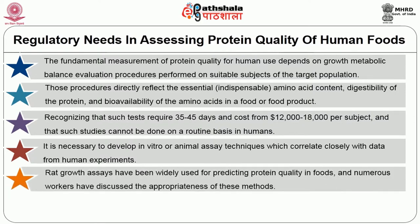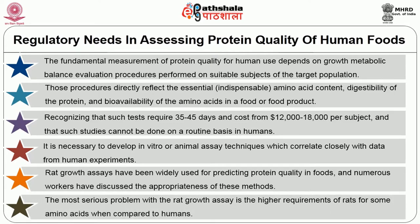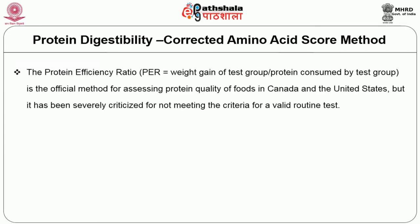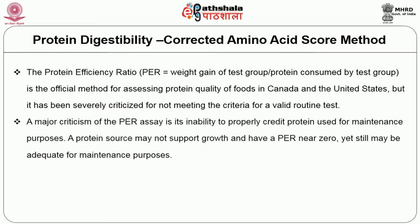Rat growth assays have been widely used for predicting protein quality in foods, and numerous workers have discussed the appropriateness of these methods. The most serious problem with the rat growth assay is the higher requirements of rats for some amino acids compared to humans. The PER — equal to weight gain of the test group divided by protein consumed by the test group — is the official method for assessing protein quality in Canada and the United States, but it has been severely criticized for not meeting the criteria for a valid routine test.